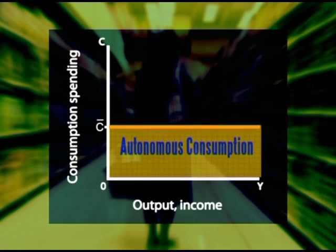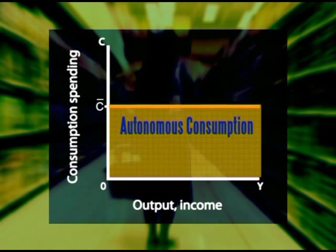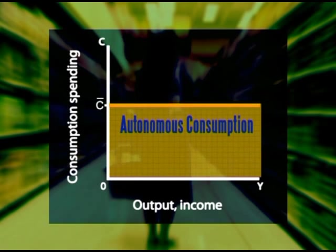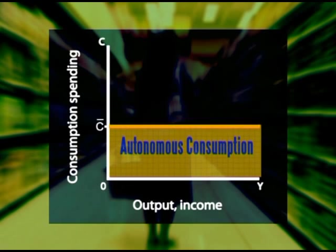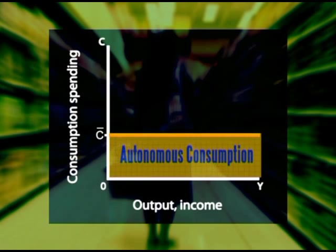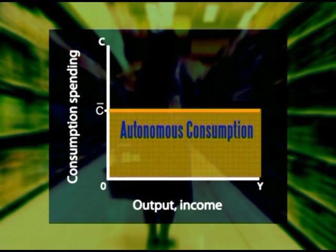A change in autonomous consumption spending changes this vertical intercept. For instance, an increase in household wealth, and note I say wealth, not income, perhaps because a good investment has paid off or an inheritance has come through, will cause that household to increase their autonomous spending pattern. This is indicated by a higher vertical intercept.